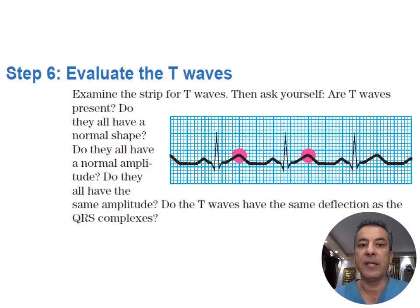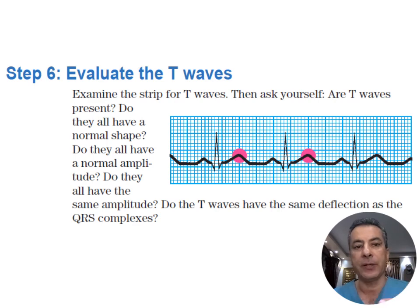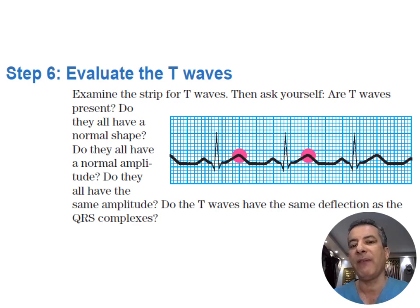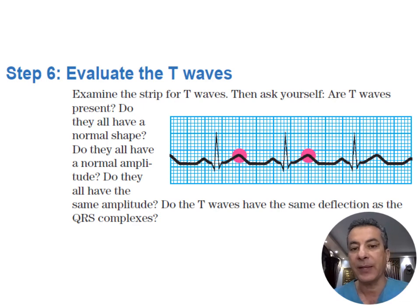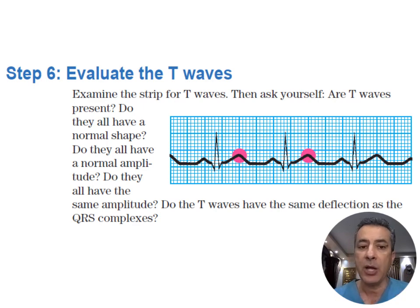The sixth step is evaluation of the T waves. A normal T wave axis typically mirrors the normal P wave axis, being upright in all leads except aVR, and in V1 it may be biphasic with a wide range of variability influenced by age and gender. Any deviations from the expected upright appearance in most leads — particularly abnormal peaking or T wave inversion — should be duly noted.